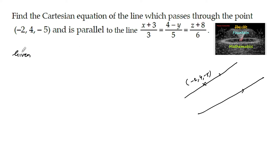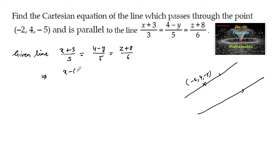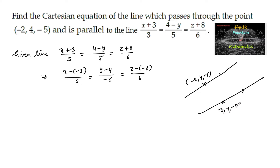The given line is (x+3)/3 = (4-y)/5 = (z+8)/6, which can also be written as (x - (-3))/3 = (y - 4)/(-5) = (z - (-8))/6. So the parallel line passes through the point (-3, 4, -8) and has direction ratios 3, -5, and 6.